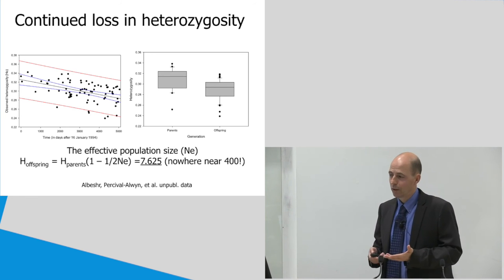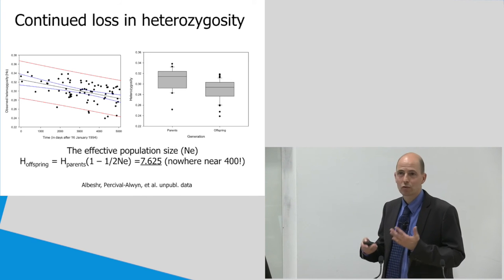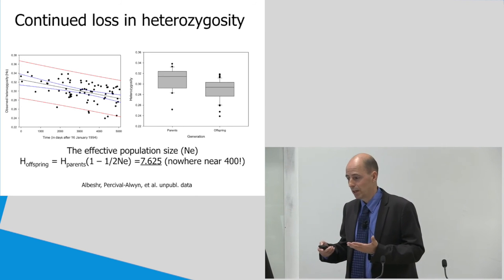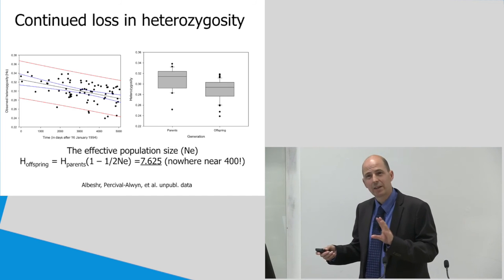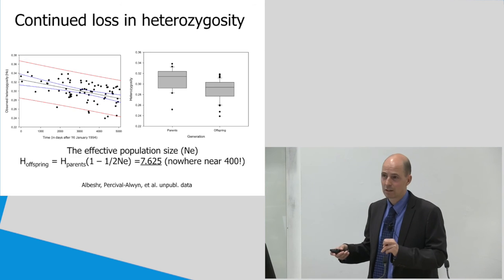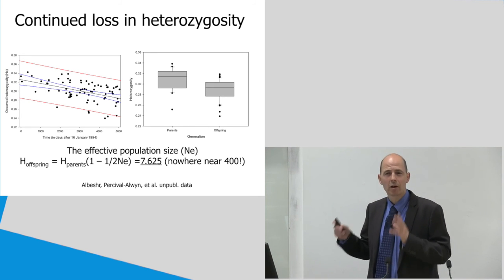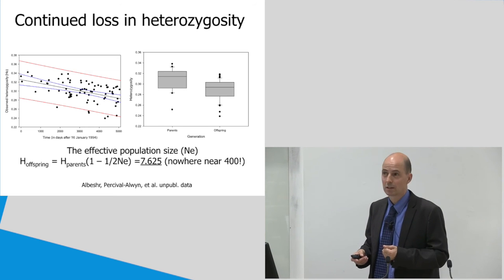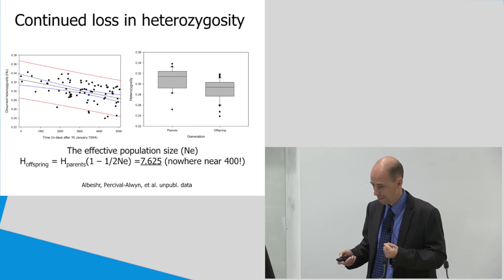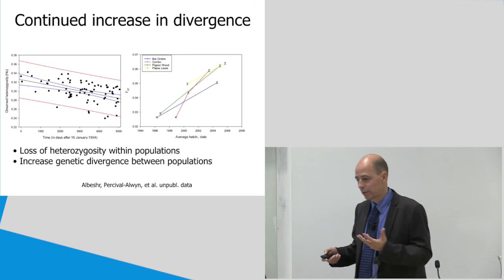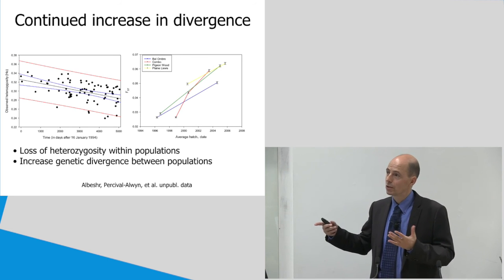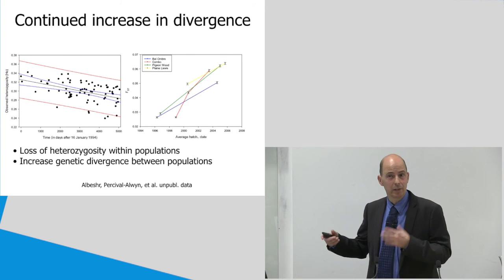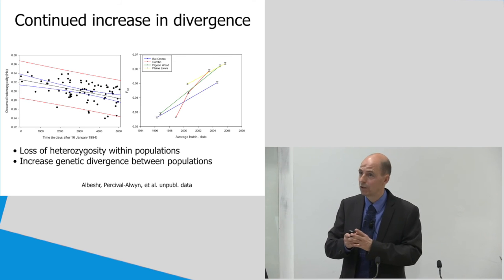Now, the first thing we found is that the loss of heterozygosity, which is a measure of gene diversity, is continuing. So, even though the species have recovered in size, there is a continuous loss of genetic variation. In fact, when you compare the heterozygosity or gene diversity between parents and their offspring, there is such a large reduction that the effective population size, based on this reduction, is less than 10. It's about 7.6. So, this is a number far, far smaller than the 400, which is the living number of birds. What we also found, and this is consistent with genetic drift, is that there is an increase of genetic divergence between the different populations. So, the different populations of Mauritius are fixing different alleles, and they're losing other alleles. And this causes the populations to diverge from one another.